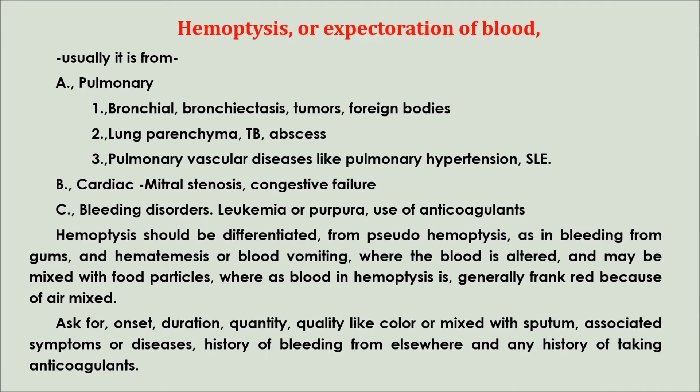Hemoptysis, or expectoration of blood. It is usually from: A. Pulmonary — 1. Bronchial: bronchiectasis, tumors, foreign bodies; 2. Lung parenchyma: TB, abscess; 3. Pulmonary vascular diseases like pulmonary hypertension, SLE. B. Cardiac: mitral stenosis, congestive failure. C. Bleeding disorders: leukemia or purpura, use of anticoagulants. Hemoptysis should be differentiated from pseudohemoptysis, as in bleeding from gums, and hematemesis, where the blood is altered and may be mixed with food particles — whereas blood in hemoptysis is generally frank red because of air mixed. Ask for onset, duration, quantity, quality like color or mixed with sputum, associated symptoms or diseases, history of bleeding from elsewhere, and any history of taking anticoagulants.